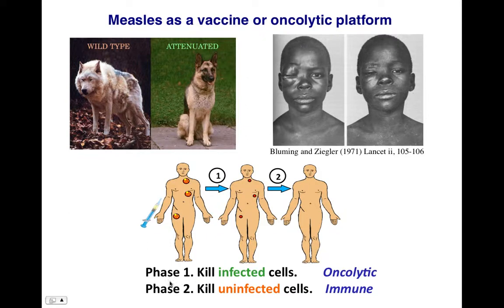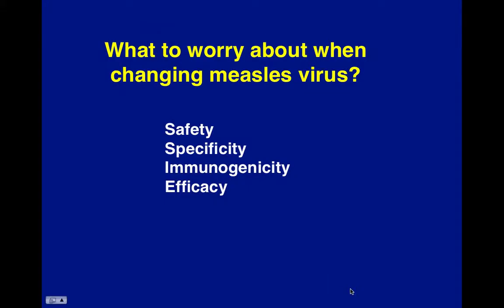The basic idea for oncolytic therapy: you can kill infected cells by oncolytic effect, and kill uninfected cancer cells using the immune system. So infected cells are killed by the virus — with some contribution from the immune system — but there are still cancer cells left over that weren't infected, and you want the immune system to clear those up.